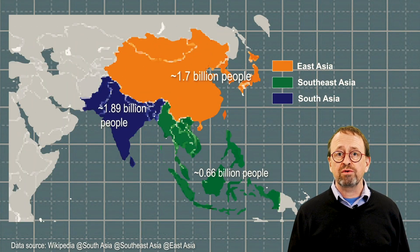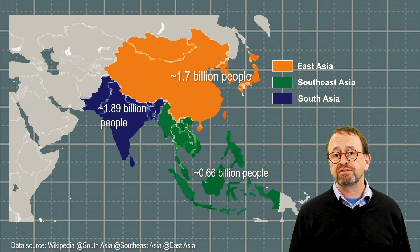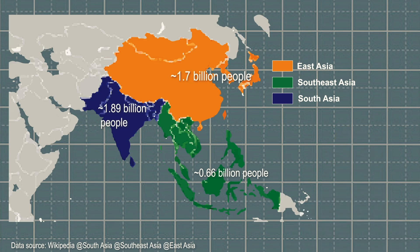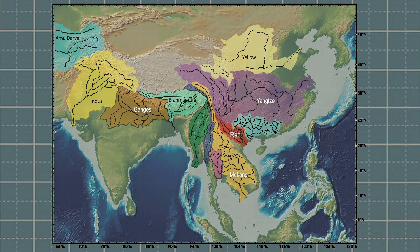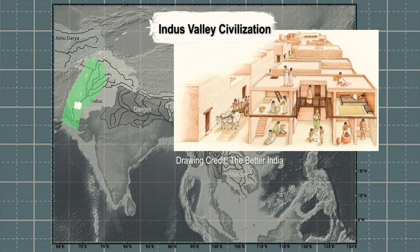So why is the monsoon important? The winter monsoon is not so important, but the summer monsoon rains are the single most important feature controlling and allowing agriculture across much of the densely populated regions of South, Southeast Asia and Eastern Asia. The summer monsoon also supplies water to the great river systems that flow out of the Asian highlands, including the Indus, Ganges, Brahmaputra, Mekong, Red, Yangtze and Yellow rivers. Many early civilizations started in these river valleys, such as the Harappan or Indus Valley culture.